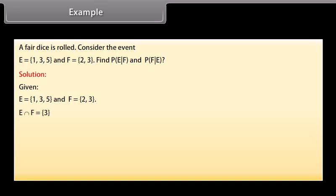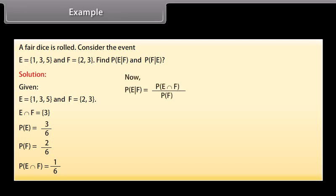E ∩ F = {3}. P(E) = 3/6, P(F) = 2/6, P(E ∩ F) = 1/6. Conditional probability of E given F = P(E ∩ F) / P(F) = (1/6) ÷ (2/6) = 1/6 × 6/2 = 1/2.